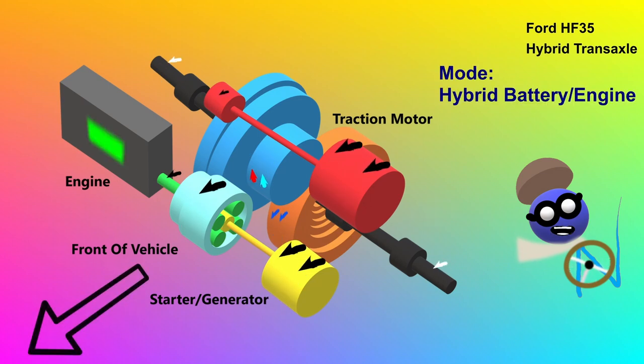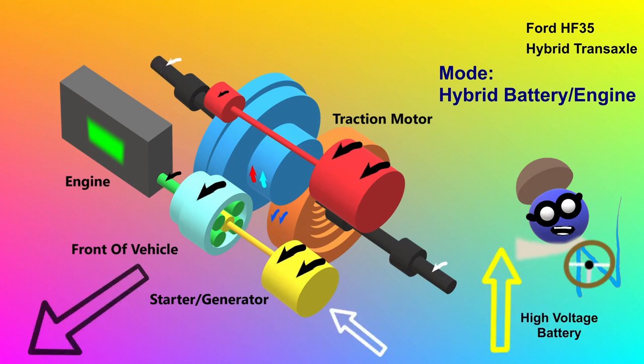The second drive mode is hybrid battery and engine. The starter generator starts the engine. The engine crankshaft, the ring gear and the starter generator spin in the same direction as the traction motor. The engine assists the traction motor in forward motive power. Also, the engine applies energy to the starter generator which now charges the high voltage battery a lot.